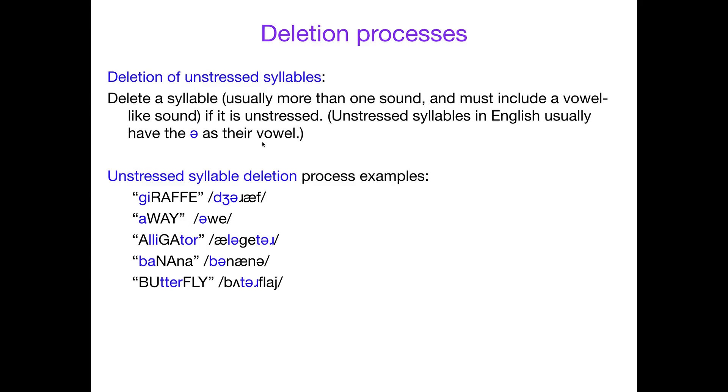Here are some examples where I've actually put the stressed syllable—the one that gets the emphasis—in all capitals. So giraffe: the juh is the unstressed one. Away: the uh is the unstressed one. Alligator: ah and gay are stressed, but the luh and the tur are not—they have that schwa. Banana: buh is unstressed and the final nuh is unstressed, but the na is stressed. Butterfly: that intermediate tur is unstressed.